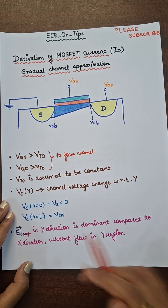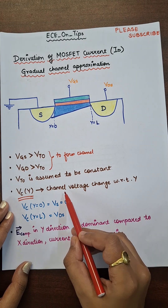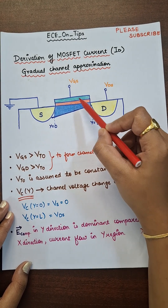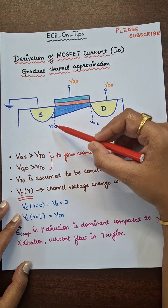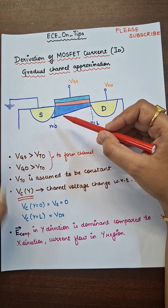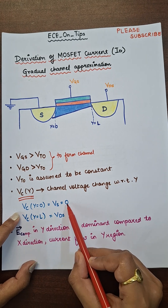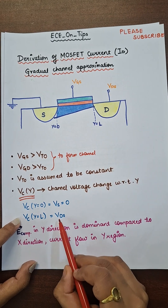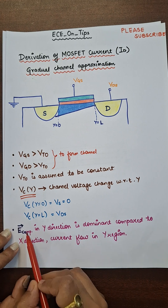An important term here is VCY — the channel voltage that changes with respect to y. If we consider VC at y equal to 0, that is at the source terminal, since the source terminal is grounded, VC(0) equals 0. And VC at the drain end equals VDS.